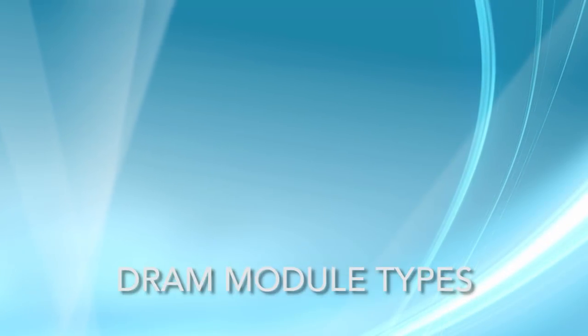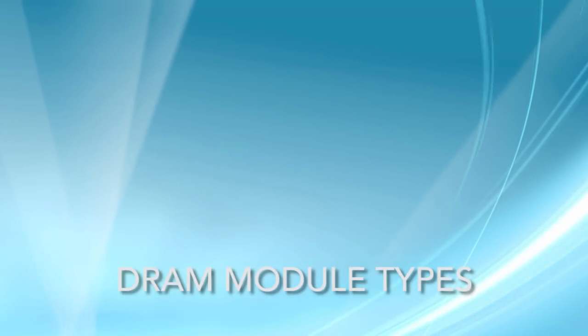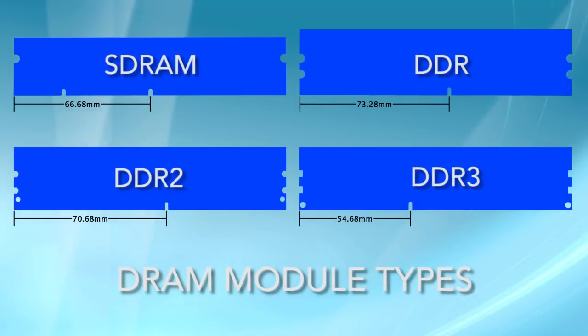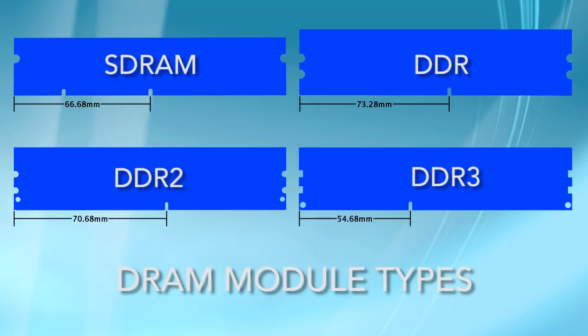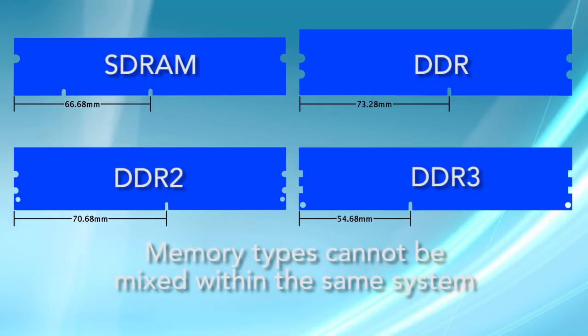Now let's talk memory types. There are four main memory types: SDRAM, DDR, DDR2, and DDR3. Each memory type uses its own module design, and each motherboard is only built to accept one type. Therefore, you cannot mix memory types within the same system. For example, if your system is designed for DDR2, you cannot install DDR3 modules.